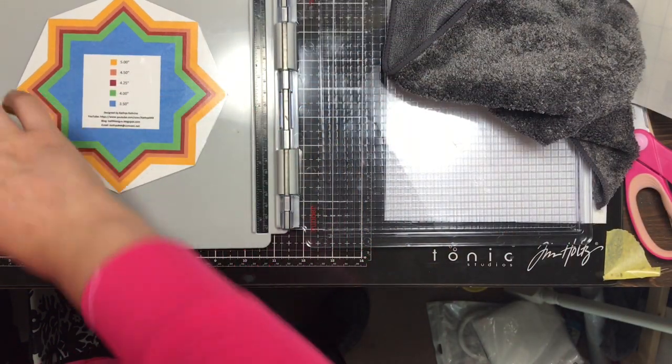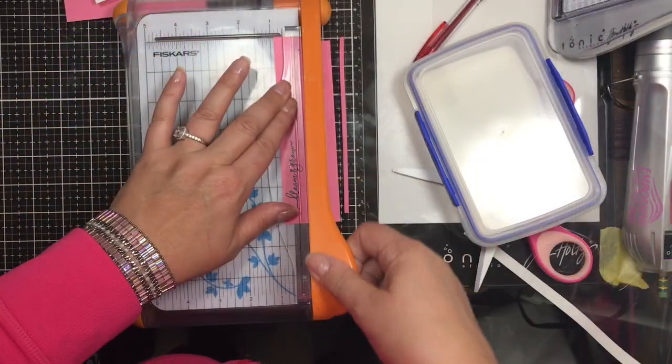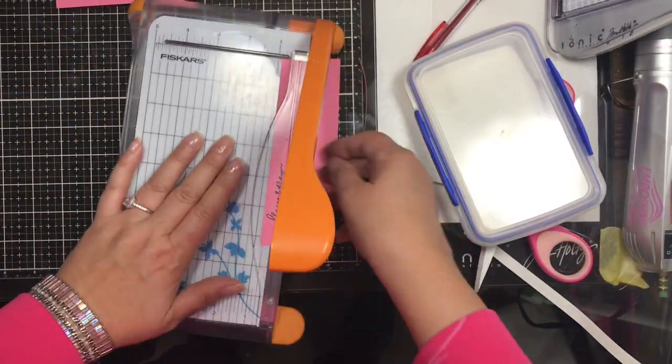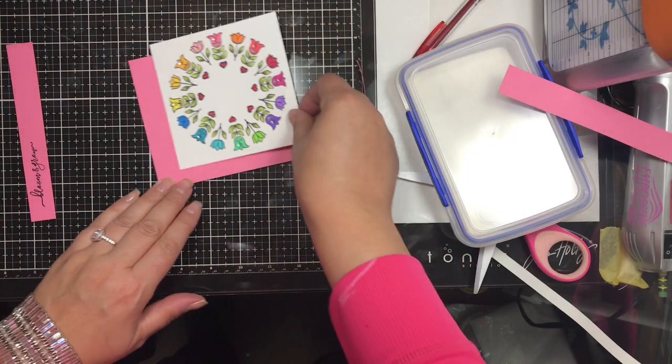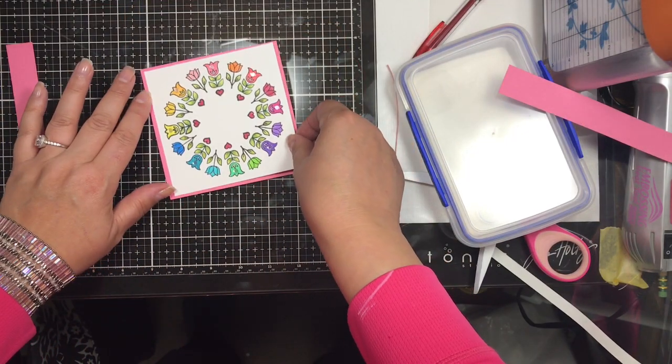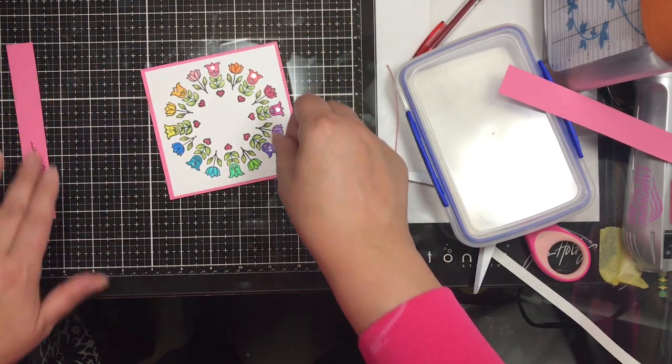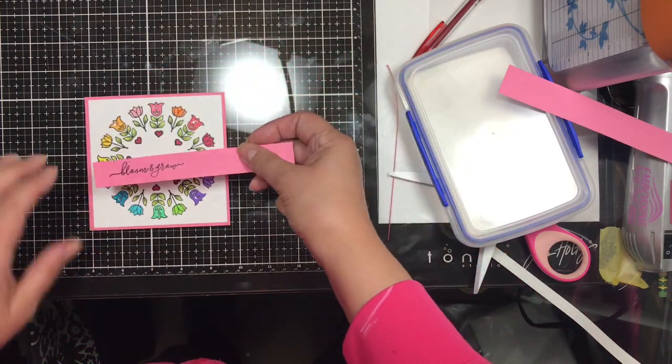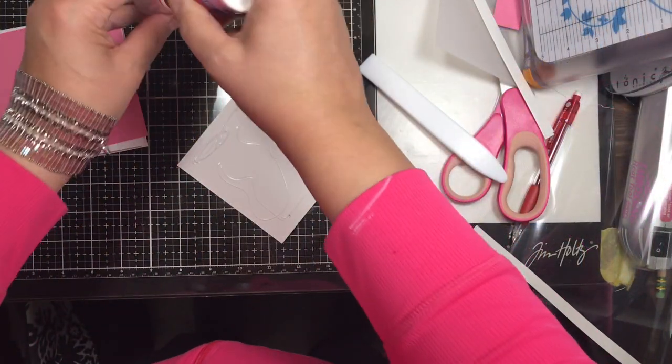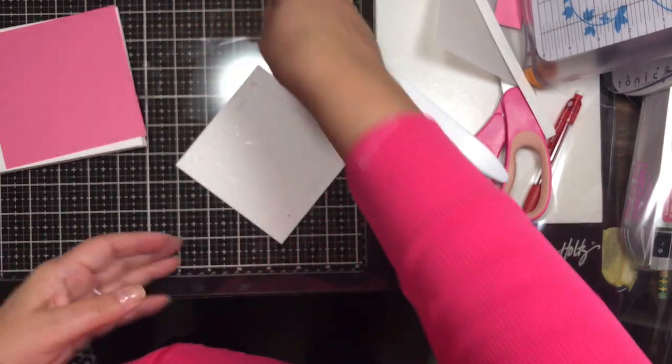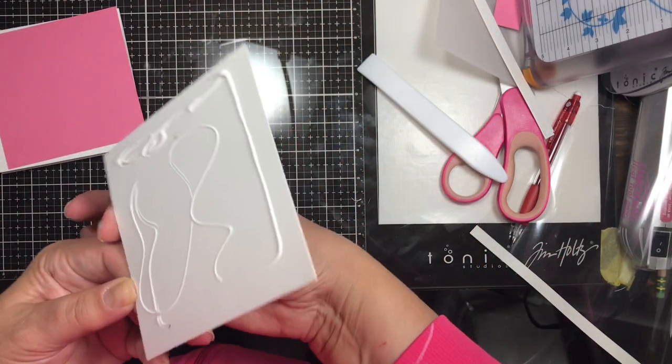I decided on a bright color pink because I'm not ready for fall yet, and I adhered this panel onto some really pretty pink cardstock to keep it kind of bright. Then I used the sentiment that came with the stamp that says bloom and grow.